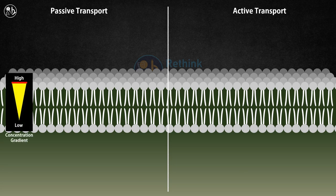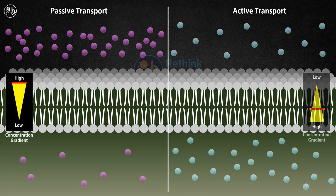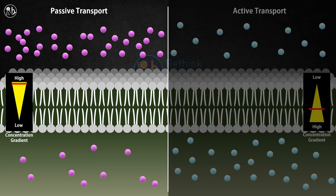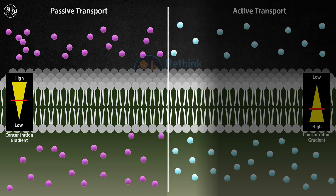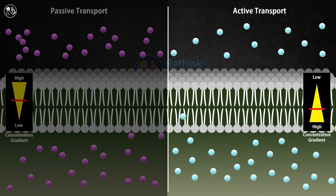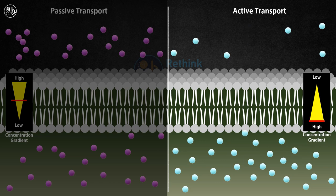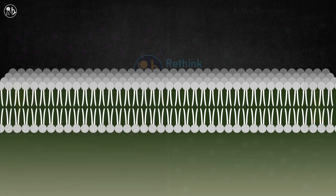In passive transport, substances move from an area of high concentration to an area of low concentration without using energy. In active transport, energy is required to move substances against their concentration gradient. In this video, we will be focusing on passive transport.